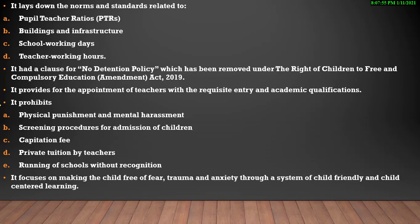It lays down norms and standards related to pupil-teacher ratio: primary में 30 is to 1 (30 students and 1 teacher), और upper primary classes में 35 is to 1 (for every 35 students, one teacher is compulsory). Building and infrastructure proper होना चाहिए, school working days और teacher working hours — यह सब RTE Act में properly mentioned है.